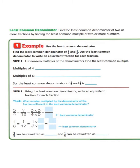Let's take a look at another example. We begin by finding the least common denominator. To find the least common denominator of two or more fractions, we find the least common multiple of the denominators. Find the least common denominator of three-fourths and one-sixth, then use it to write an equivalent fraction for each.